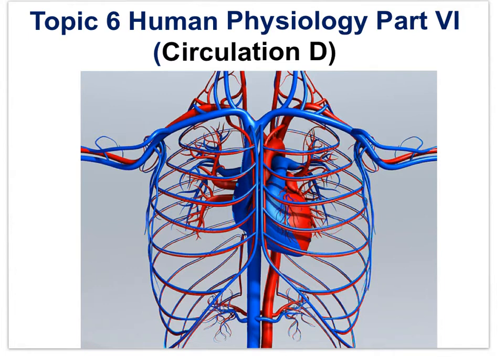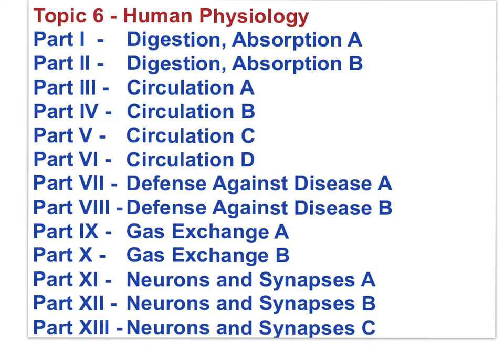The essential idea is the blood system continuously transports substances to cells and simultaneously collects waste products. Here is the first of two slides that provide an outline of all the available movies for Topic 6, Human Physiology, a topic for both SL and HL students. Use the outline to find the movie you need for review. This movie is focused here.